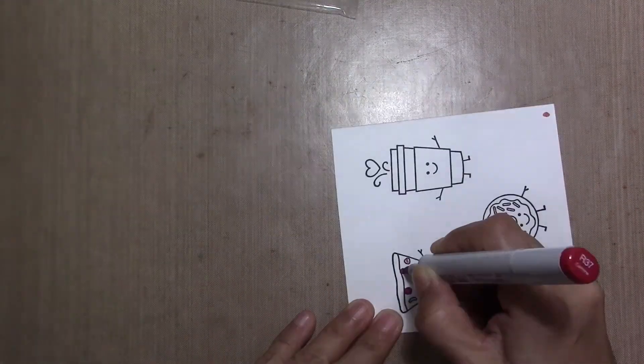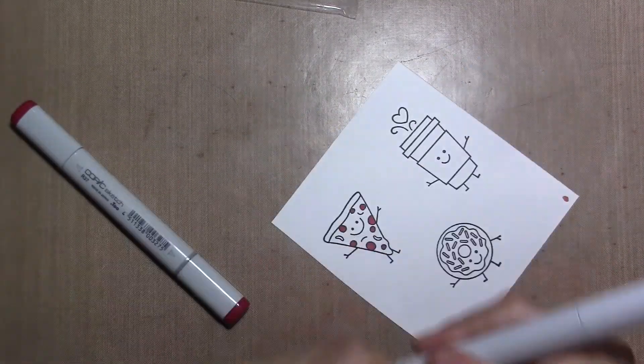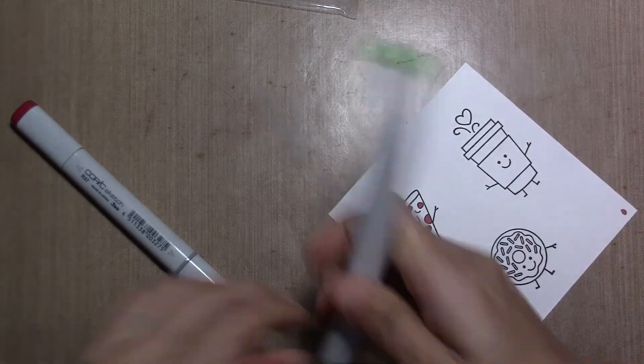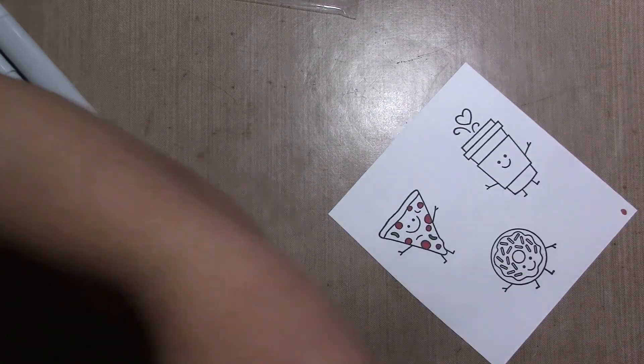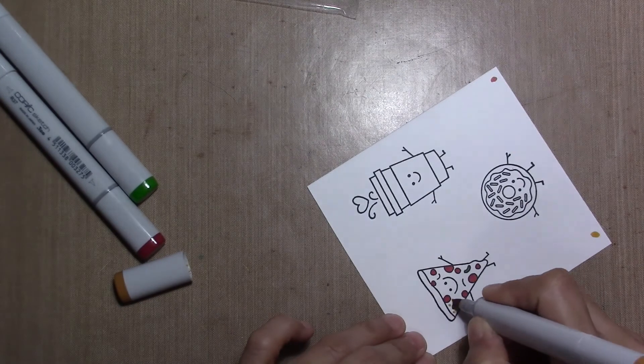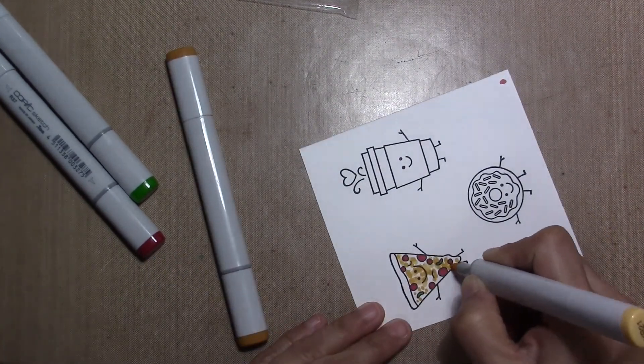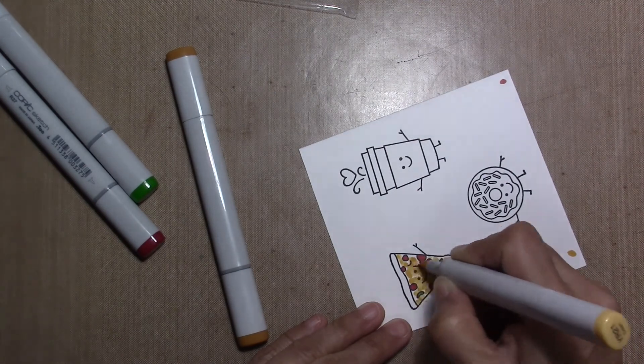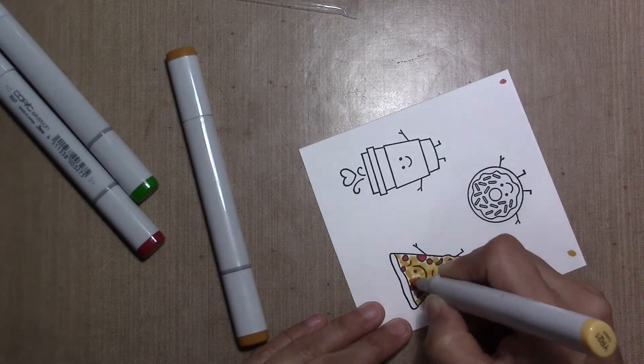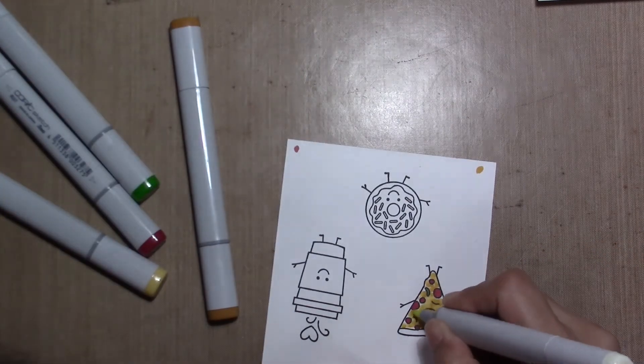I stamp twice each image and I color them with my Copic markers. I'm not going to show too much the coloring because I am not an expert in coloring with Copic markers. I just grab whatever my heart desires and start coloring.